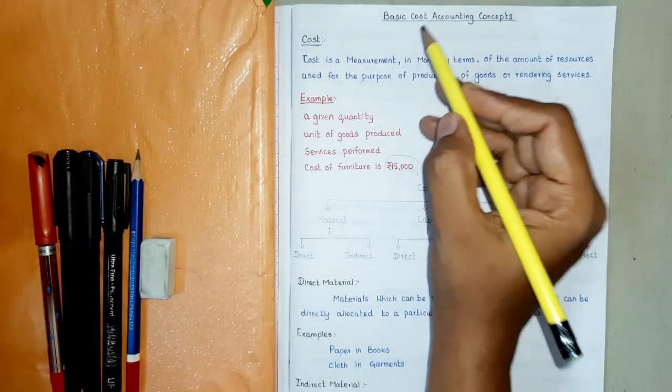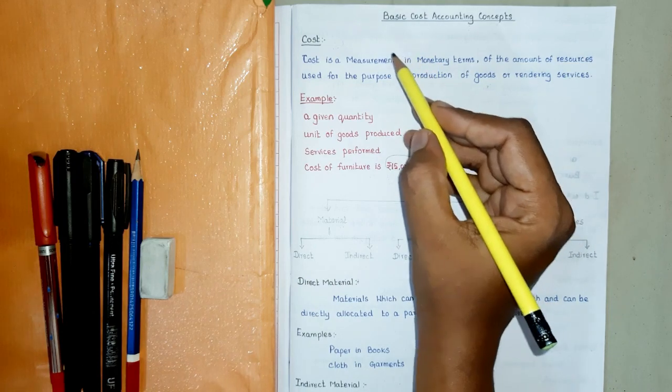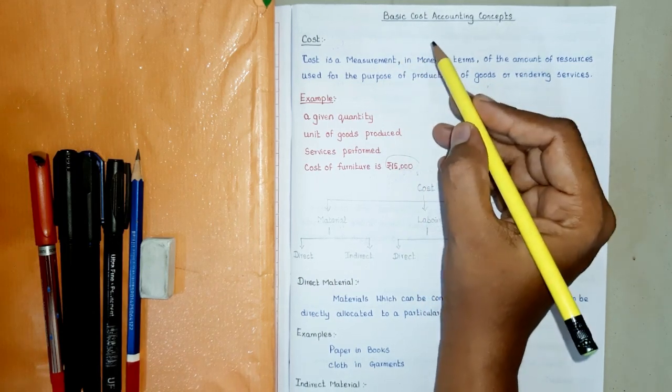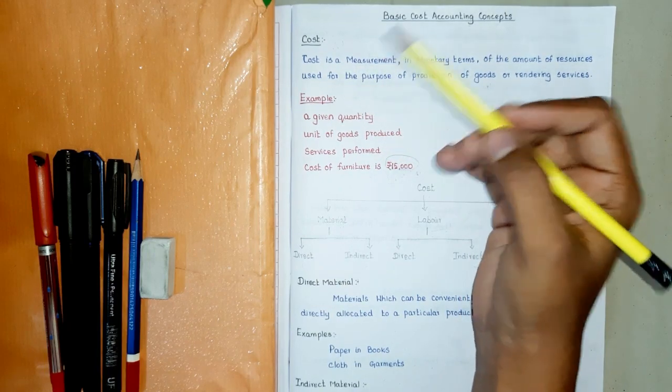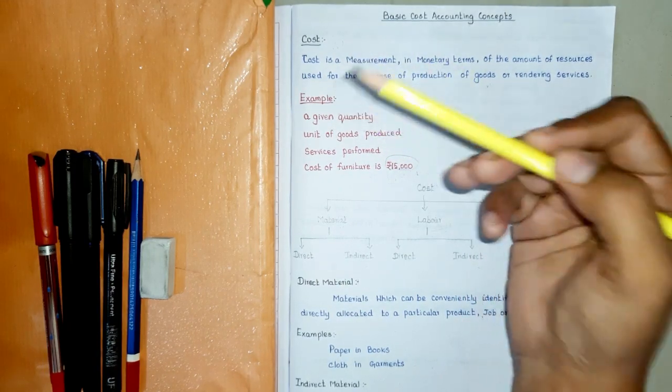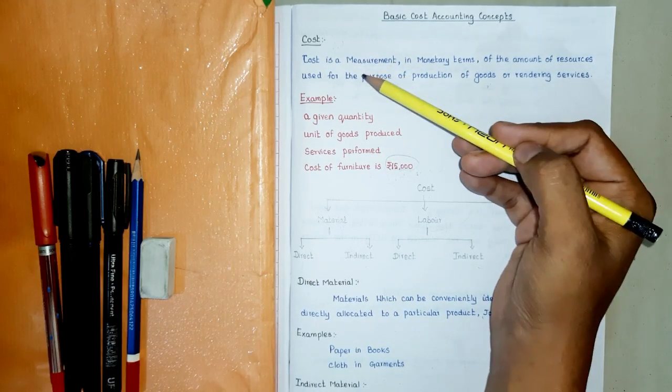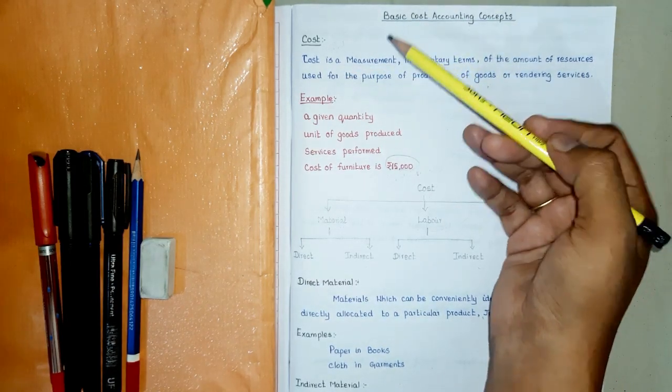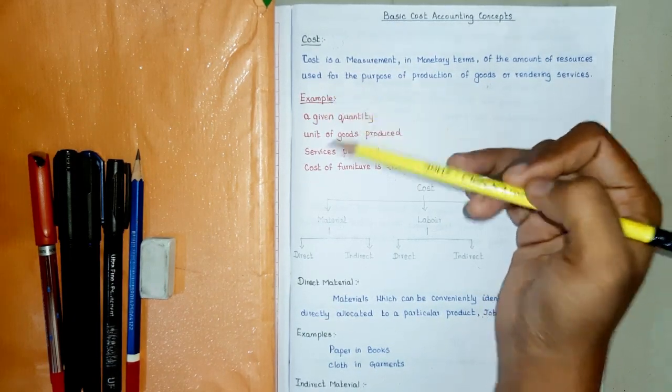Firstly, we will see how the evolution of cost accounting is. It is a specialized branch of accounting which has developed during the past few decades in order to overcome the limitations of financial accounting. Financial accounting reveals the profit or loss made by a concern during a particular period.